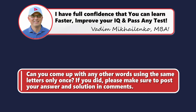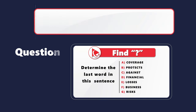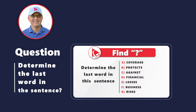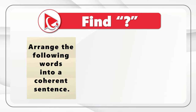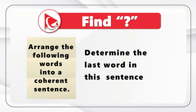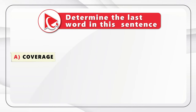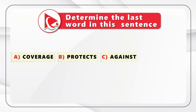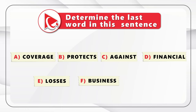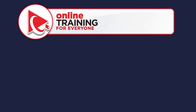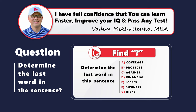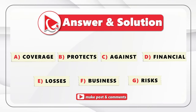Here is a question to test your verbal reasoning and analytical skills. You need to arrange the words into a coherent sentence and determine the last word. The words are: A-Coverage, B-Protects, C-Against, D-Financial, E-Losses, F-Business, G-Risks. Take a close look to see if you can build this sentence and determine the last word. To get the correct answer, let's look at each word — Coverage, Business, and Risks are subjects; Against and Financial are prepositions and adjectives; Protects is the verb; and Losses is the object.